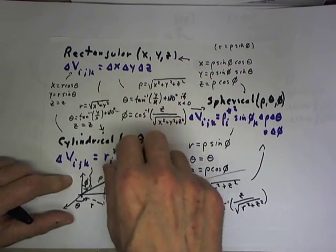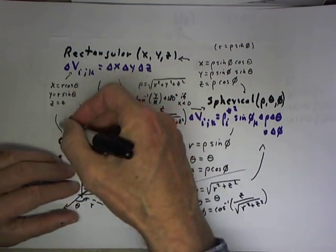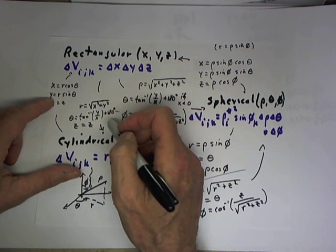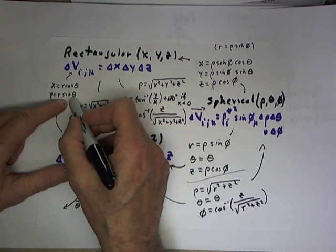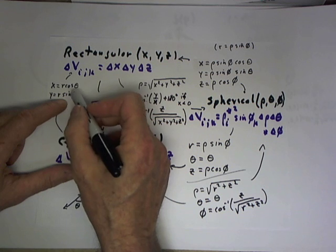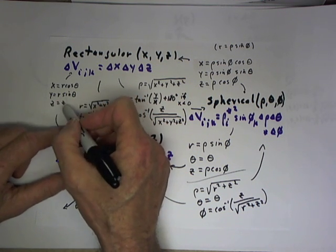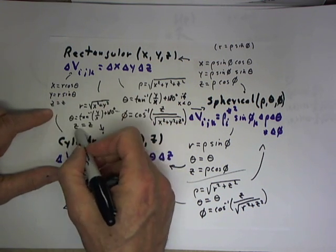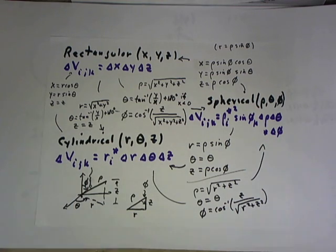The transformation in the opposite direction is even more straightforward: x equals r cosine theta, y equals r sine theta — ideas we should be extremely familiar with. And of course the z coordinate is the same in both systems.